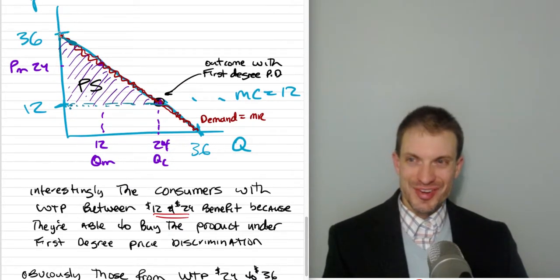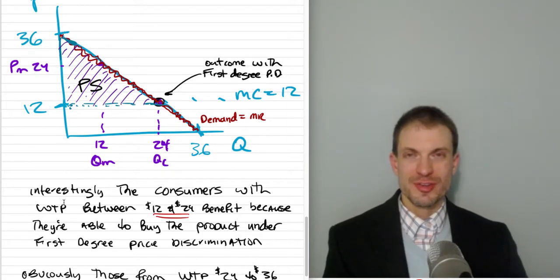However, when there's price discrimination they're getting charged exactly their willingness to pay instead of that price of 24 that they were getting from our single price monopolist.